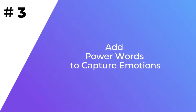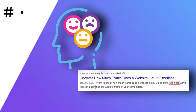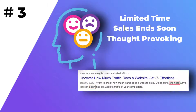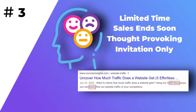Number three: add power words to capture emotions. Power words or phrases are words that add emotion to your content. You can use words like "limited time" or "sale ending soon" to create urgency, or you can spark curiosity with phrases like "thought-provoking" and "invitation only." Be sure to check out our list of over 700 power words that you can use to make your meta-descriptions irresistible.